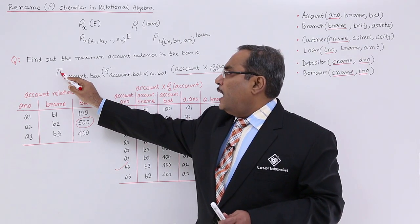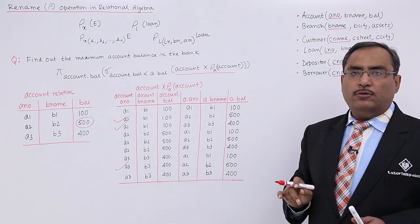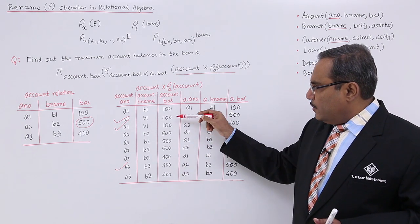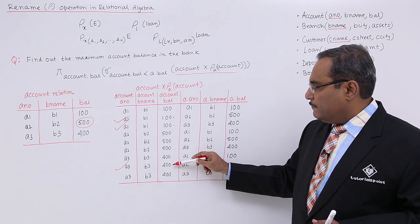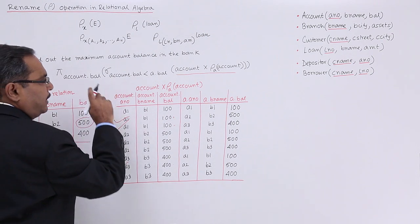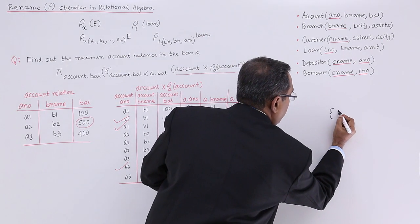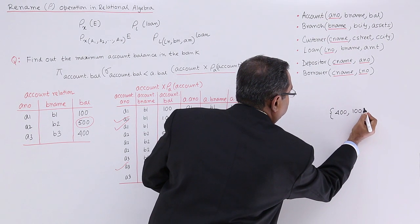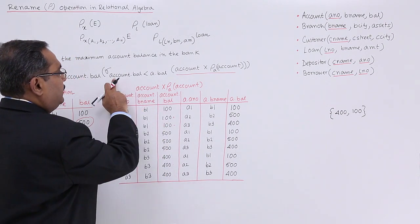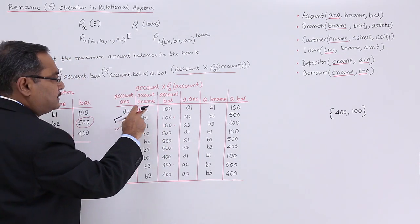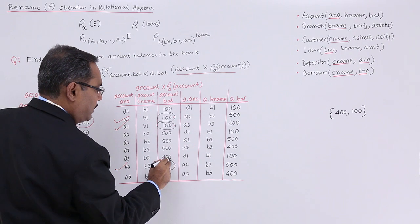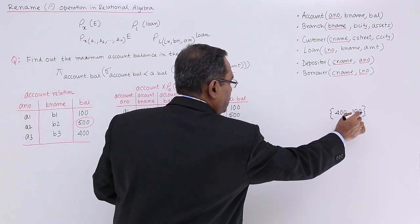Next, applying pi(account.balance) on the selected tuples gives the set {100, 400}. Meanwhile, pi(account.balance) on the full account relation gives {100, 500, 400}.